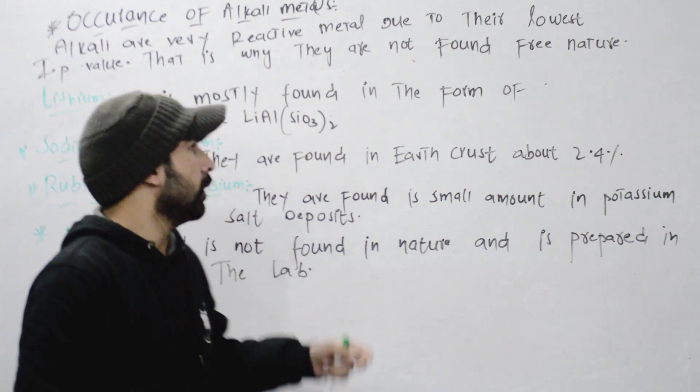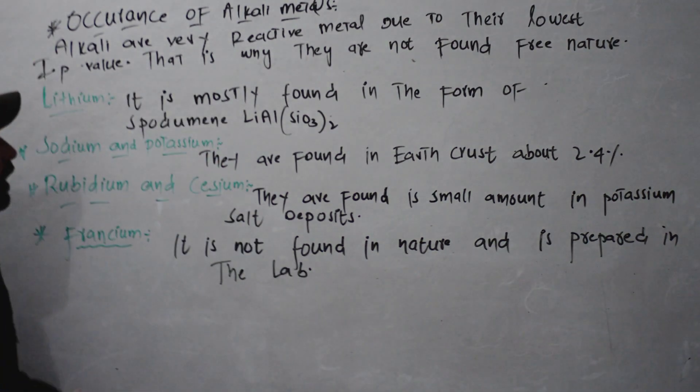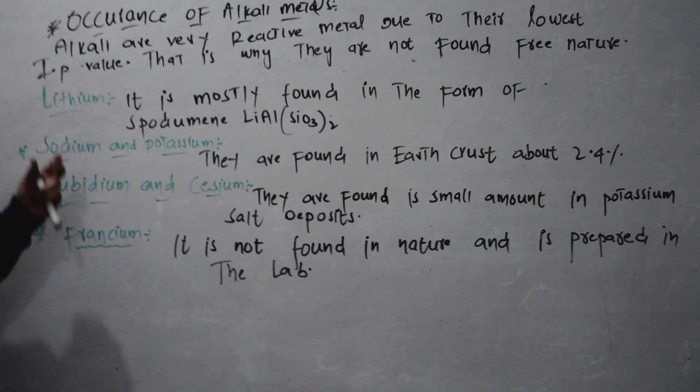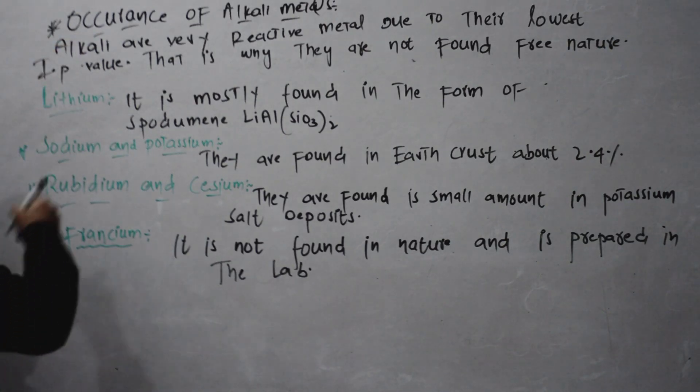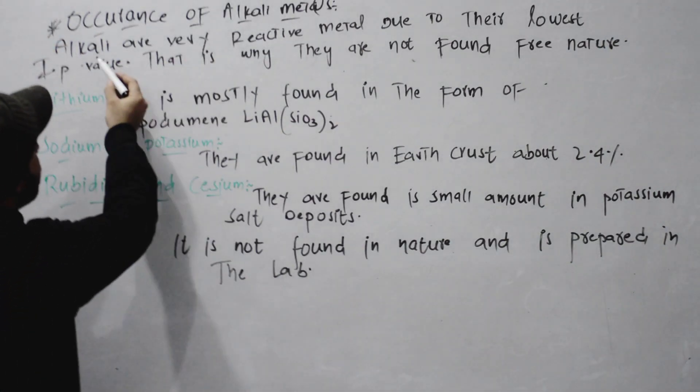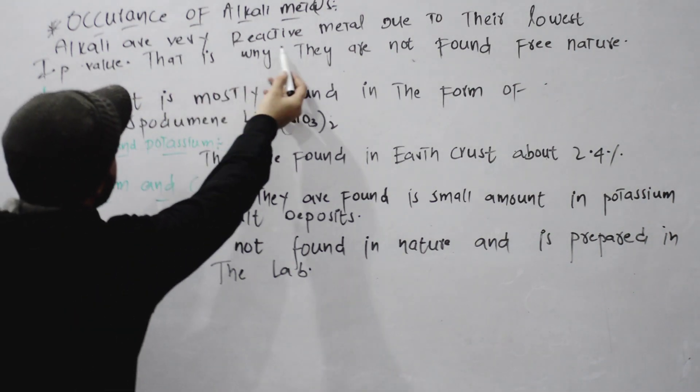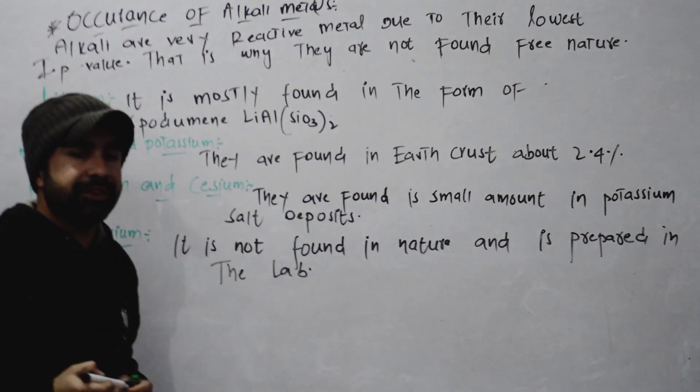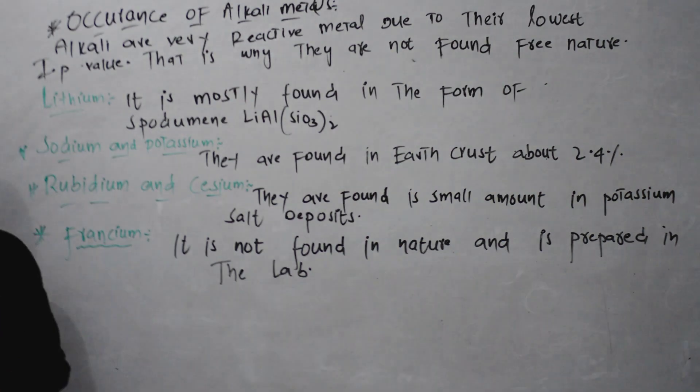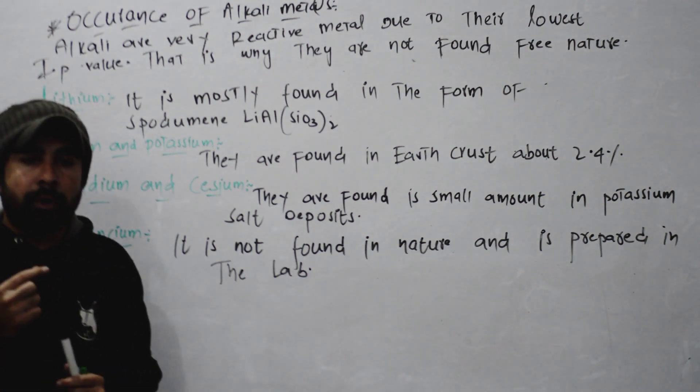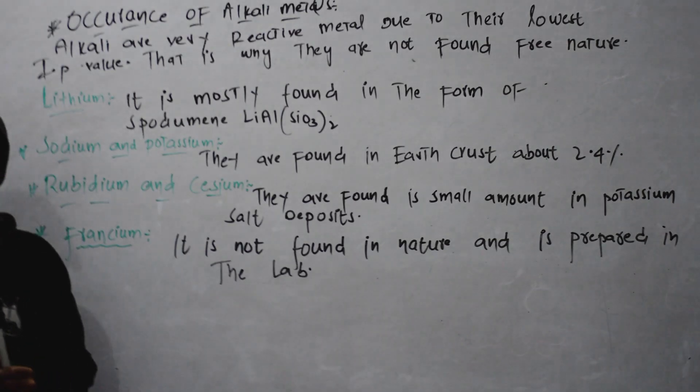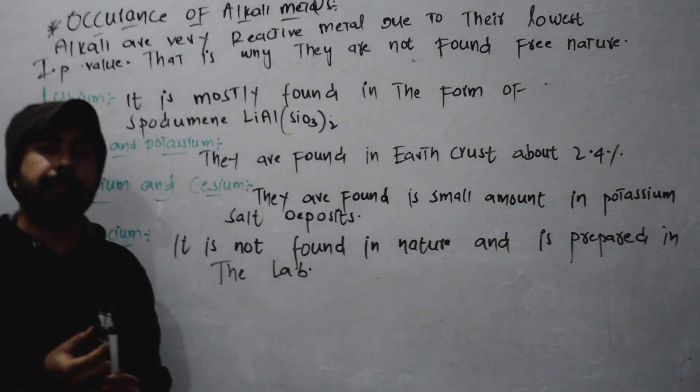The first topic is the occurrence of alkali metals. Alkali metals are very reactive metals. You know that alkali metals are very reactive. This means that the most reactive elements are in Group Number 1.